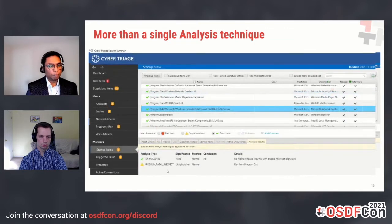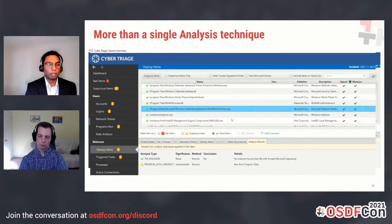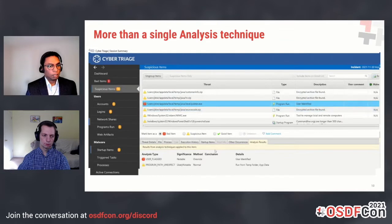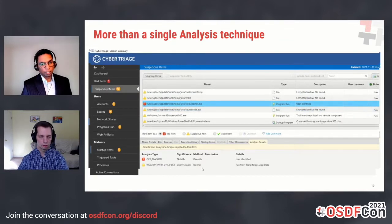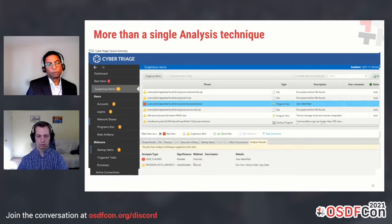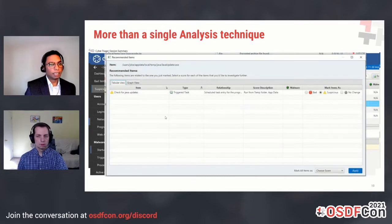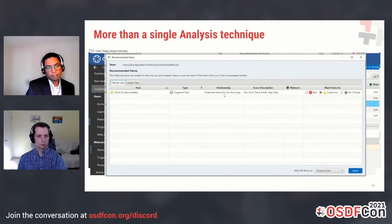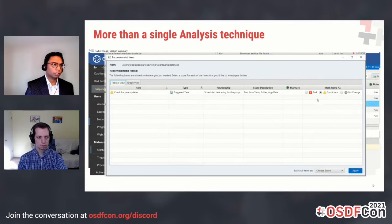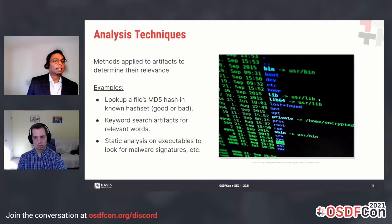Here's another example where a program ran out of an unexpected path but has no malware, so the system automatically classifies it as good. The user can also override — initially the program ran out of a temp folder with no malware scan result, but the user thinks it's really bad. When the user marks it as suspicious, they are immediately presented with a recommendation: there was a scheduled task entry for this program, so maybe you want to mark that as bad as well.